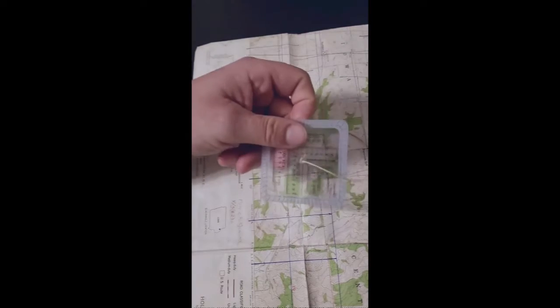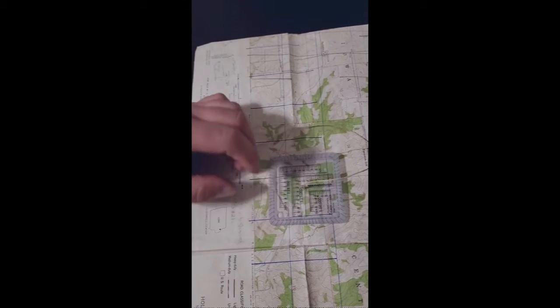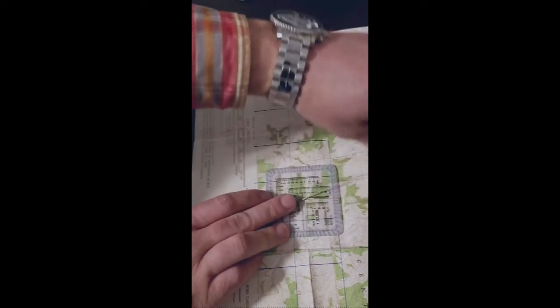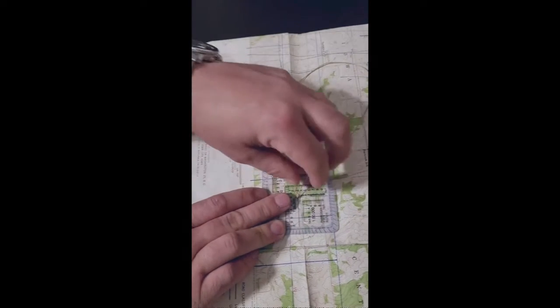This is a protractor you can use. You basically just put it down on your map. Say you want to head a particular direction, you just take a string and you have to add that on there, it doesn't come with it.